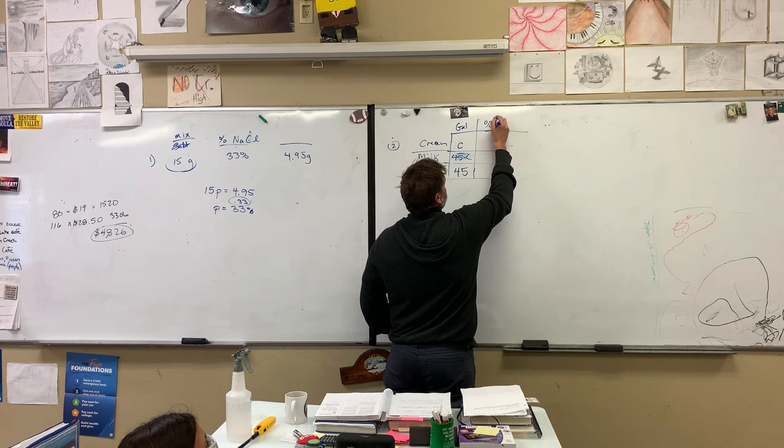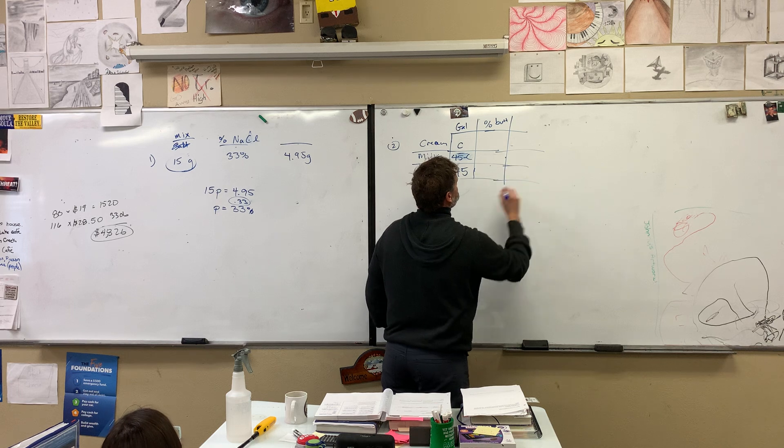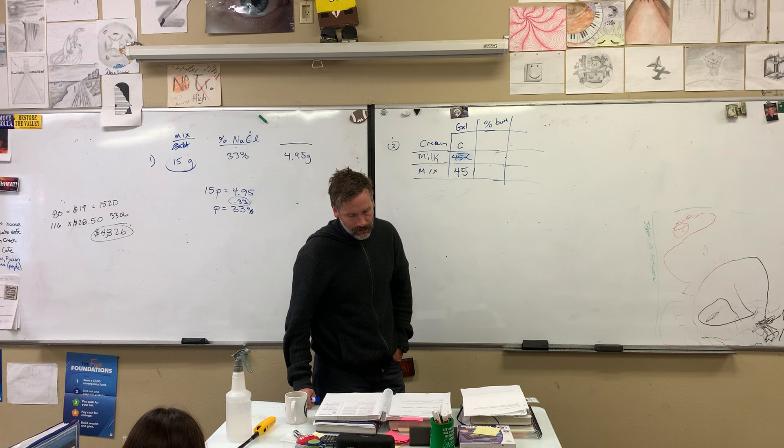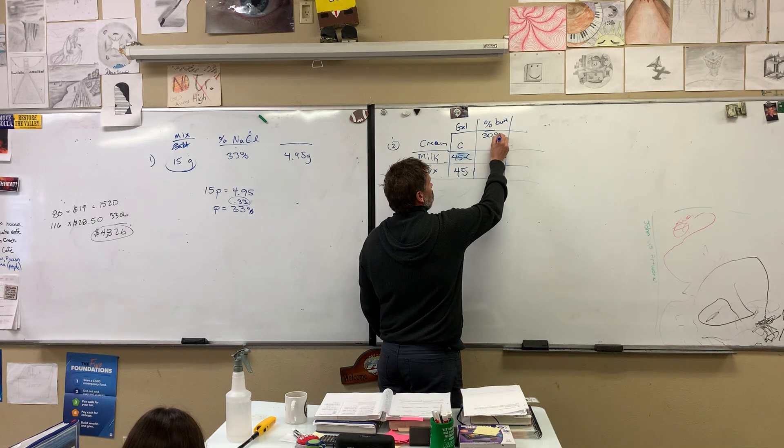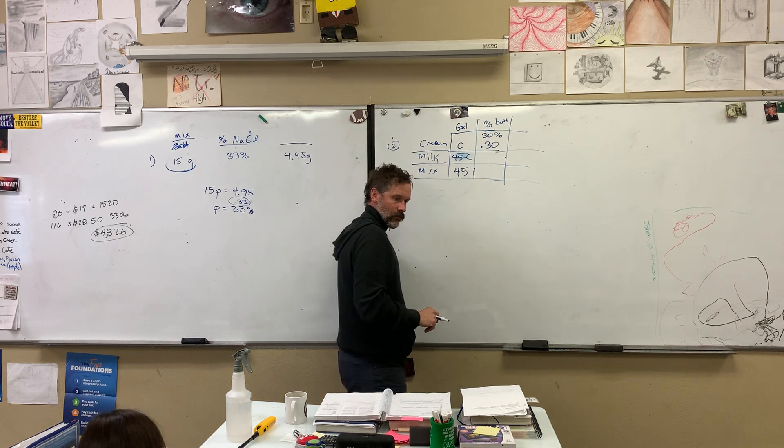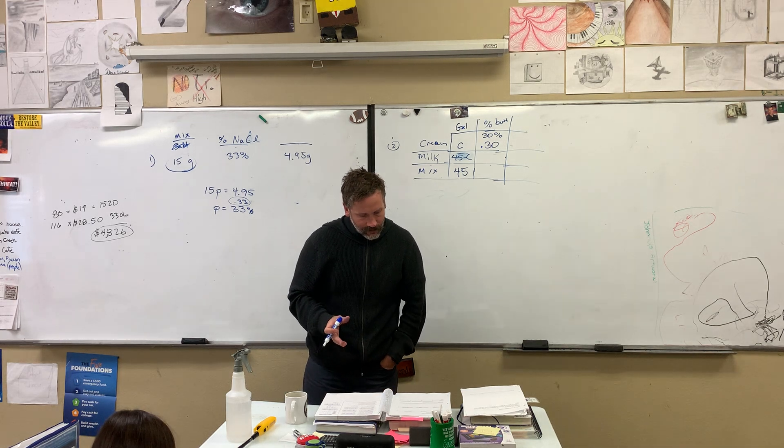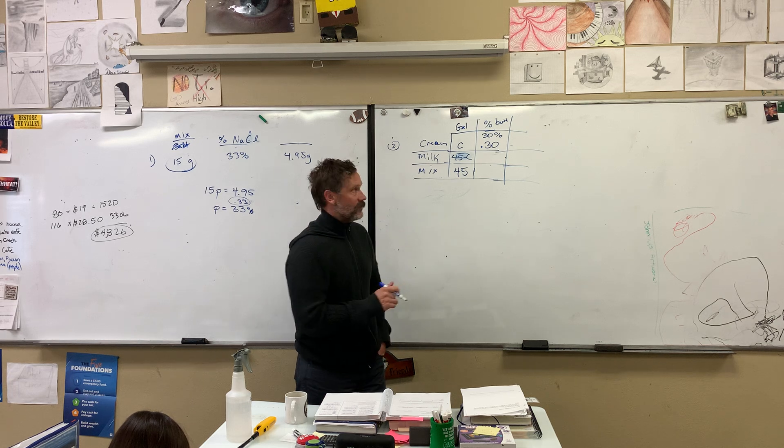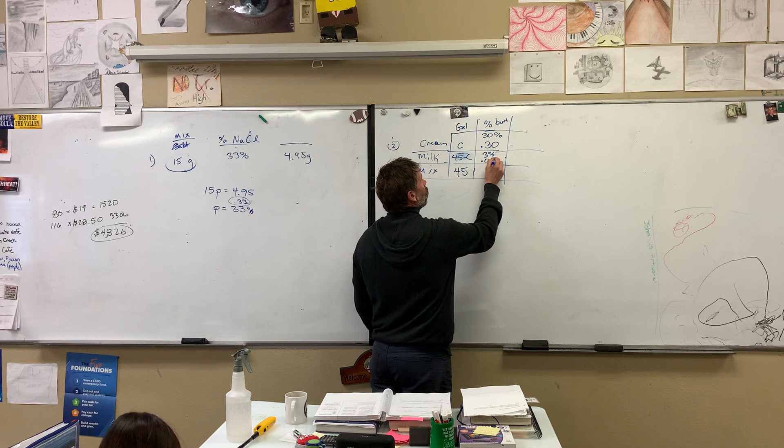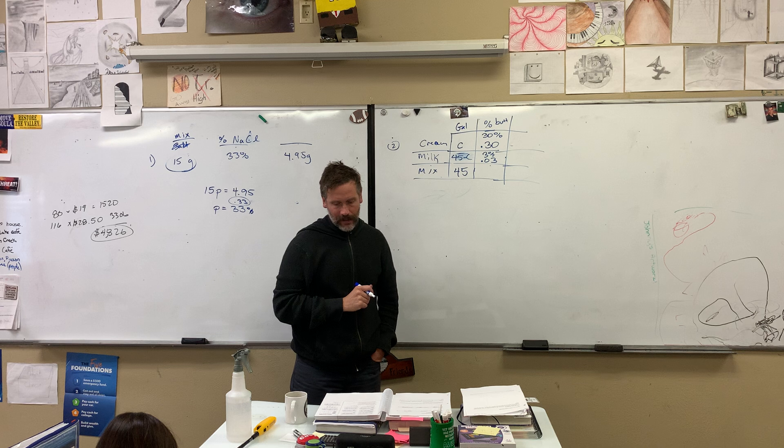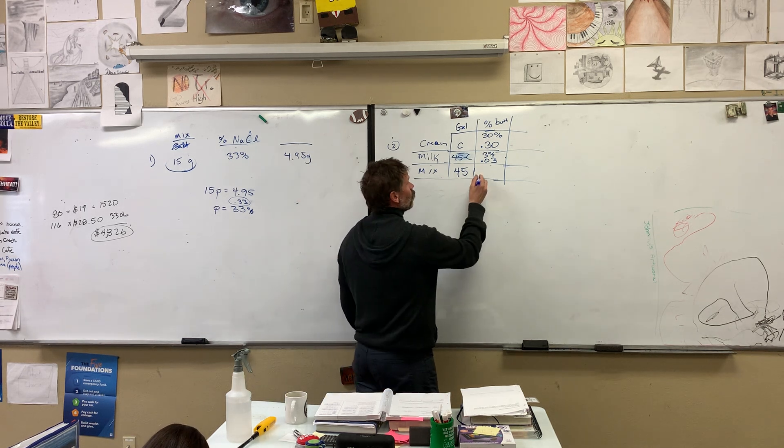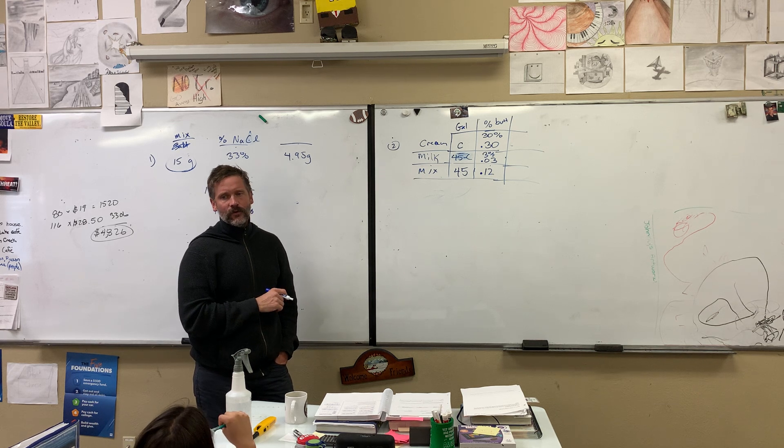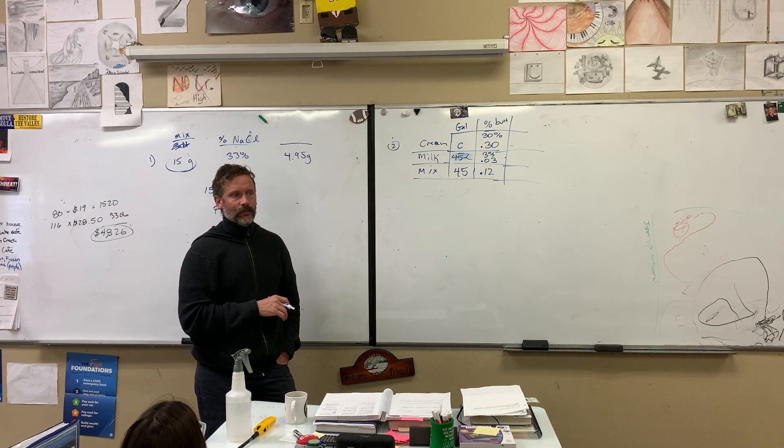The next thing is the percent of butterfat. Do they tell you the percent of butterfat for cream? Yes, they do. How much is the cream? 30 percent butterfat. So you can either write 30 percent. Just look, it tells you right there. Cream is 30 percent butterfat. Milk, what's the milk butterfat? 3 percent. 0.03. What do you want the mixture to be? 12. 12 percent butterfat. When we go to work with stuff, we're not going to leave it as 12 percent. You're going to convert it to decimal. So if you write 0.12, that's even better because that's what we're going to use.